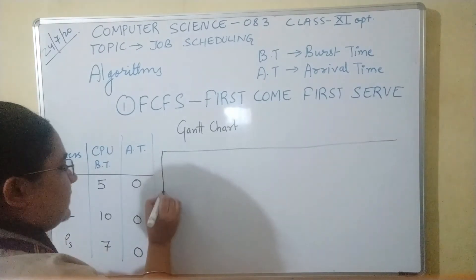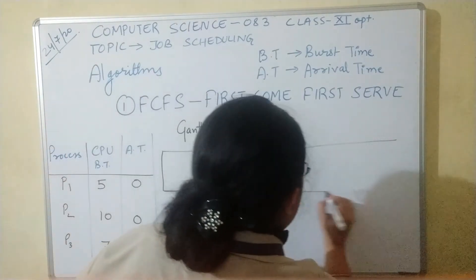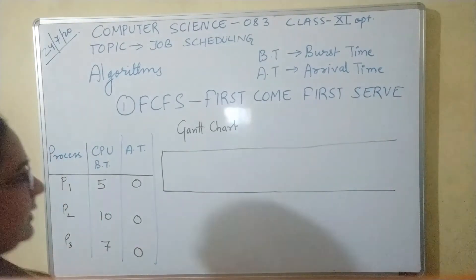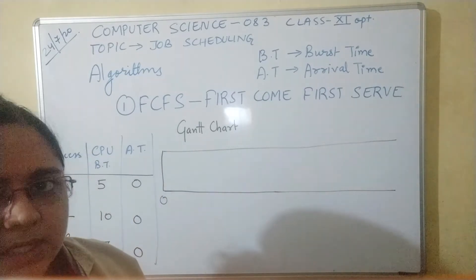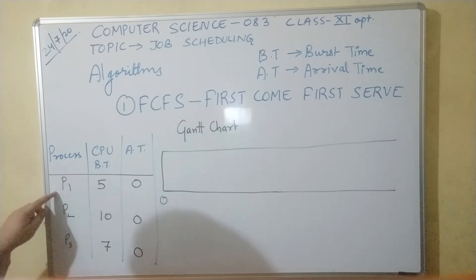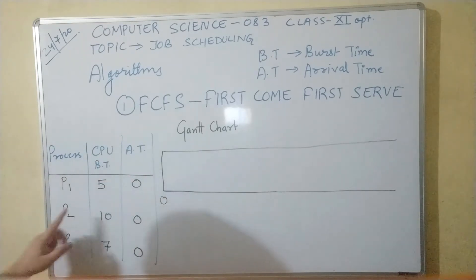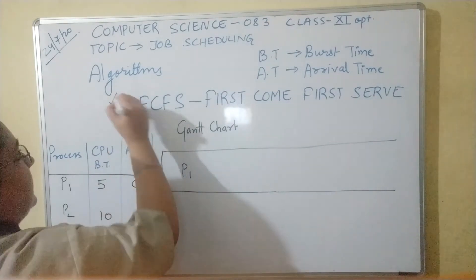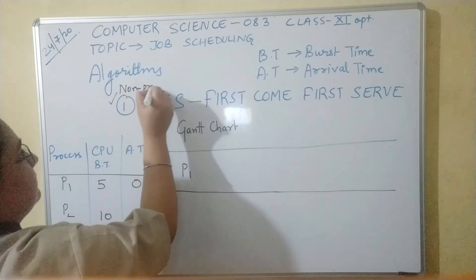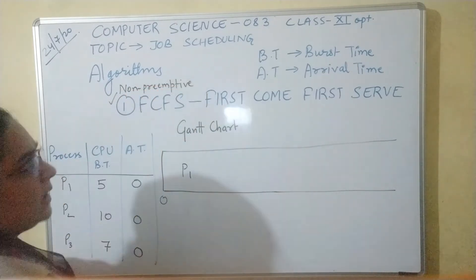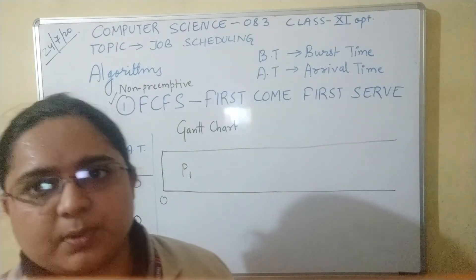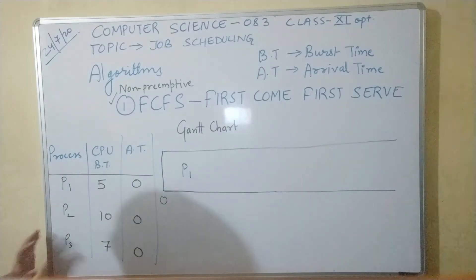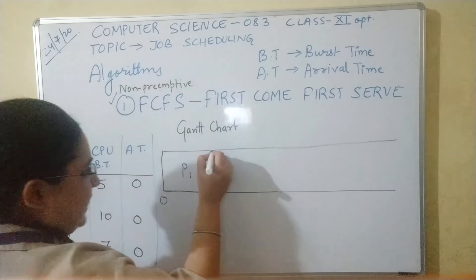Suppose the CPU burst time for P1 is 5, P2 is 10, and P3 is 7, and the arrival time is 0 for all — meaning all arrive at the same time. FCFS is non-preemptive, so the process which arrived first is allocated the CPU first. The Gantt chart shows a horizontal bar representing the CPU timeline, beginning at time 0. P1 starts executing first and executes for 5 time units.